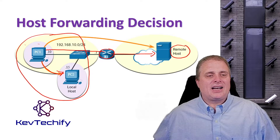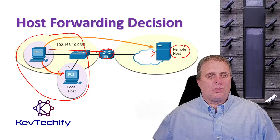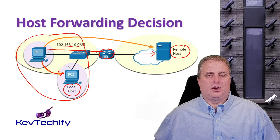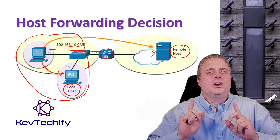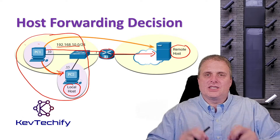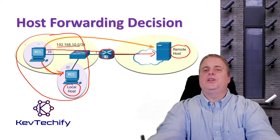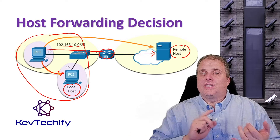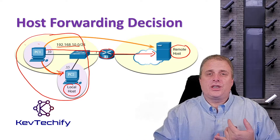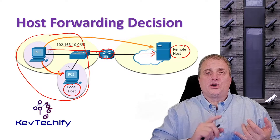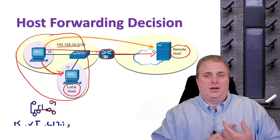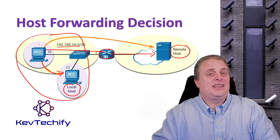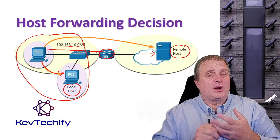If it's on our network, it has the same network portion — it's a local host. Those are two very different things, and as we start talking about routing protocols, you need to understand that. A local host is on my network; it's typically connected to a switch, and that switch is connected directly to me. If it's a remote host, I have to go through a router to get there — it's not on my local network.